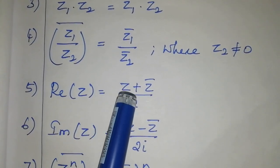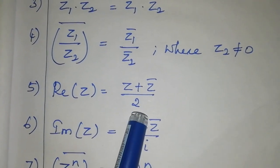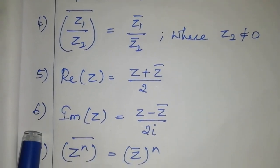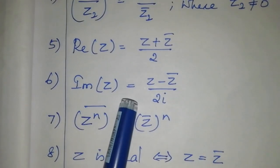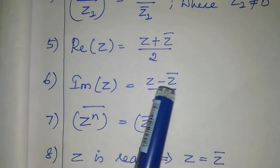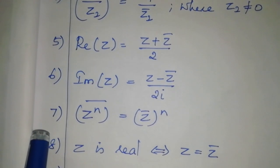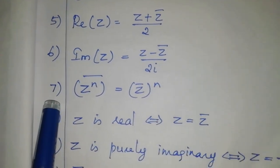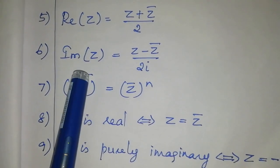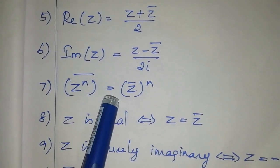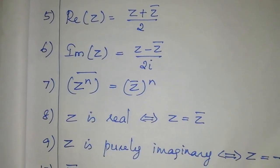The fifth property is: the real part of z equals (z + z bar) divided by 2. The sixth property is: the imaginary part of z equals (z minus z bar) divided by 2i. The seventh property is: (z^n) bar equals (z bar)^n.